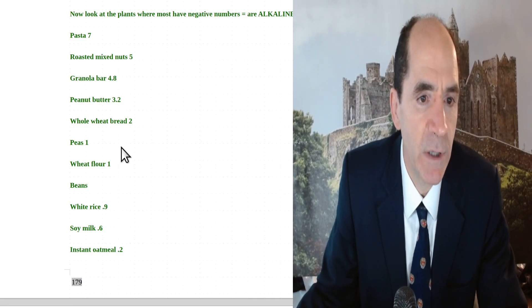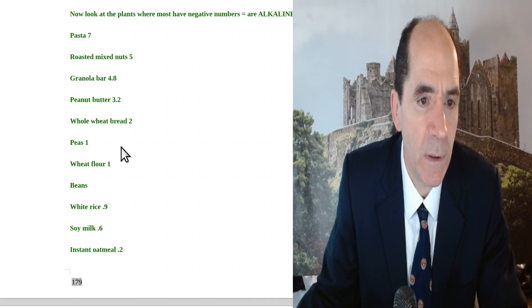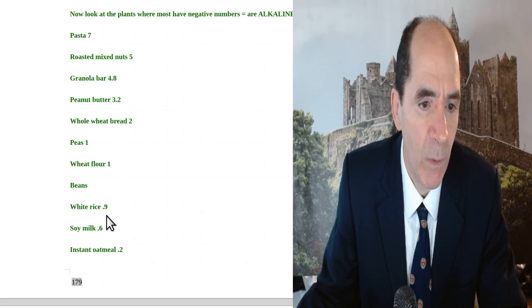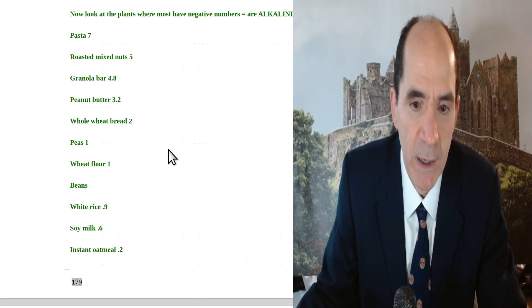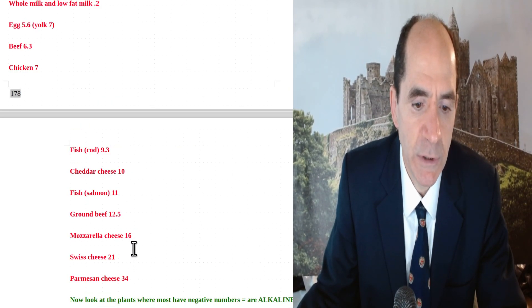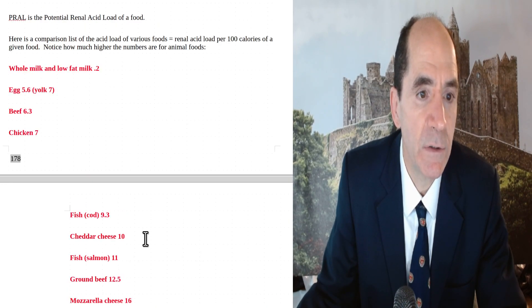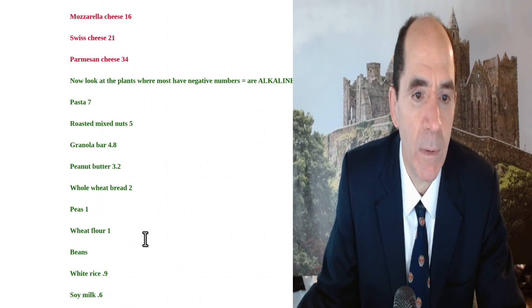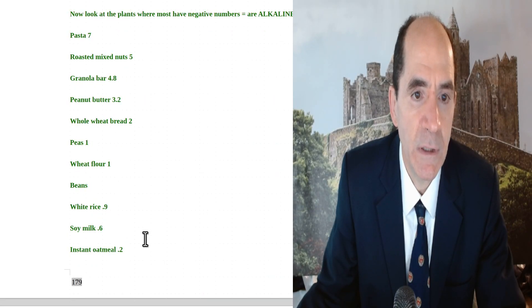Pasta 7, mixed nuts 3, peas 1, wheat flour 1, white rice 0.1. Let me go back up to look at those animal food ones. Cheese 34. Cheese is super acidic. Cheese is the big acidic one. You can see the nuts are kind of high.